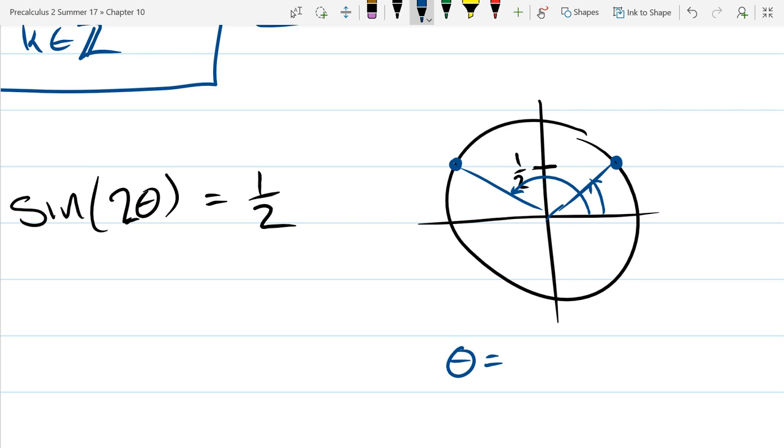So what are the names of these angles? The first one you hit is pi over six. And the second one, this would be pi over six here. So it's five pi over six.